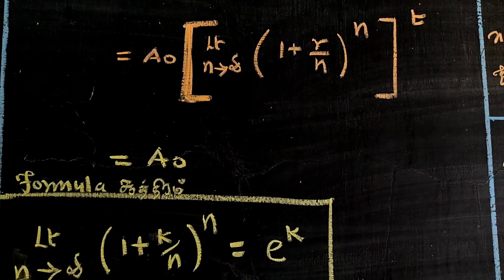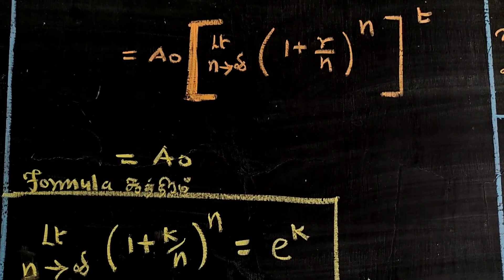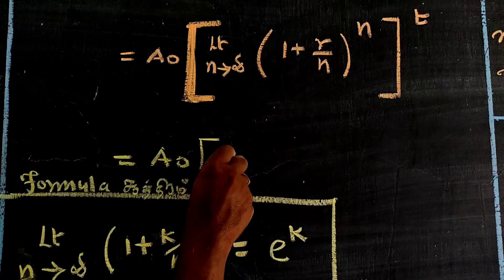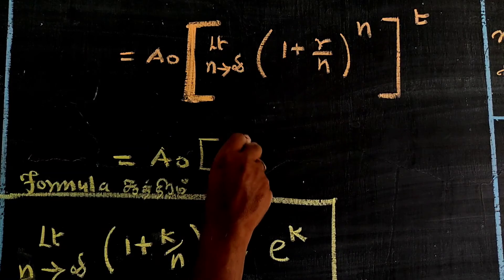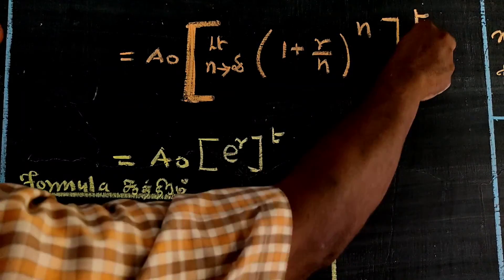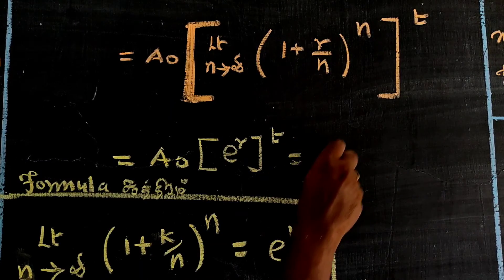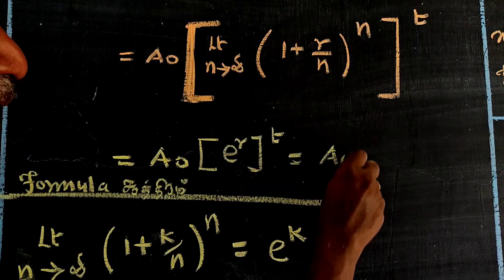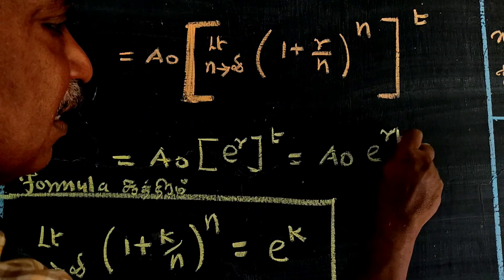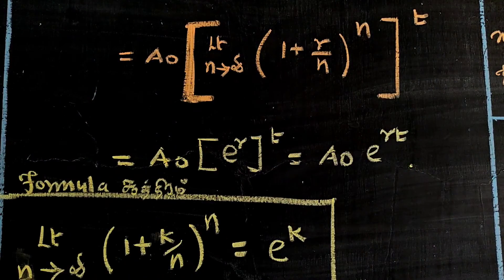Therefore, the result inside the bracket gives us A = A₀ · e^(RT), which is the continuous compounding formula.